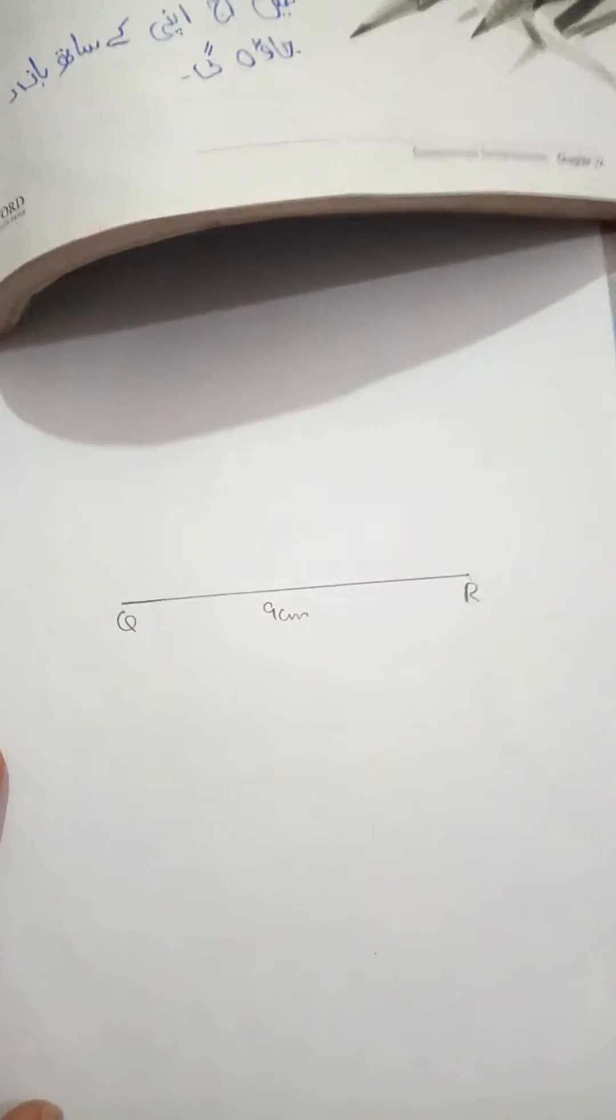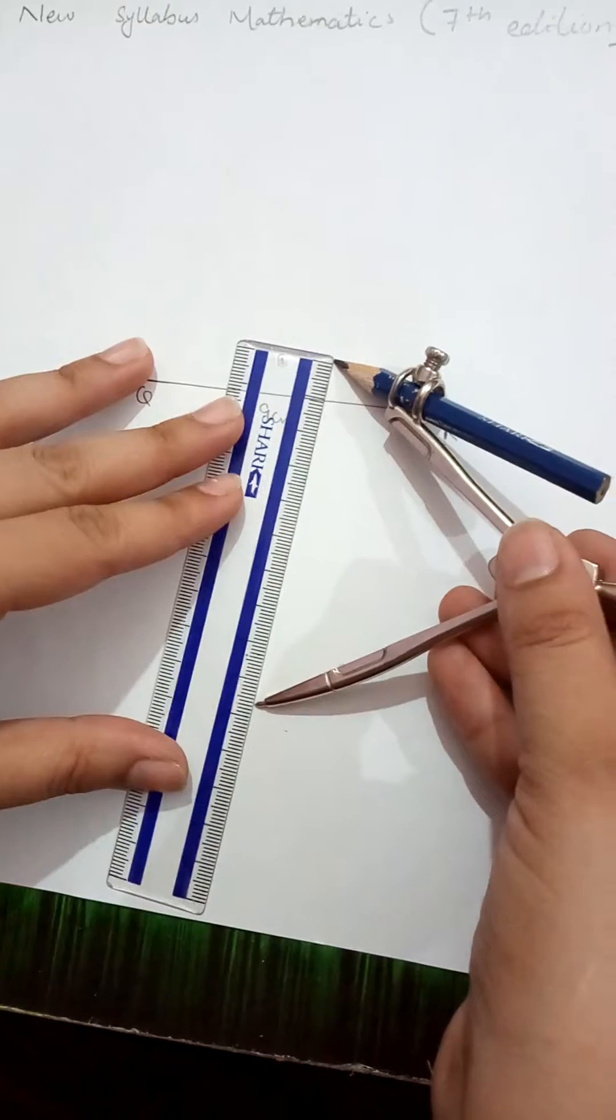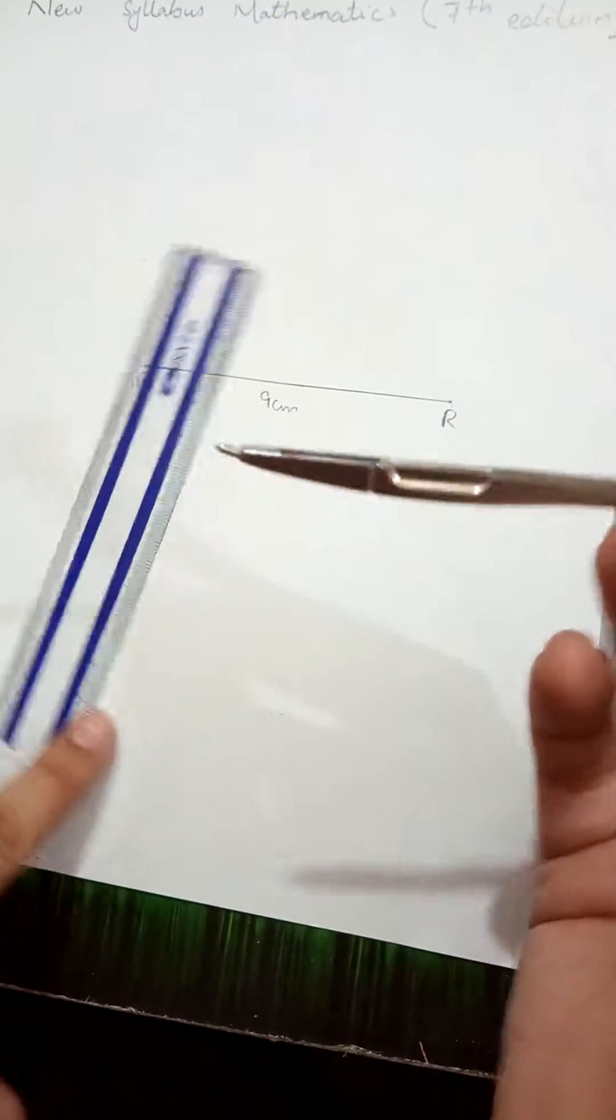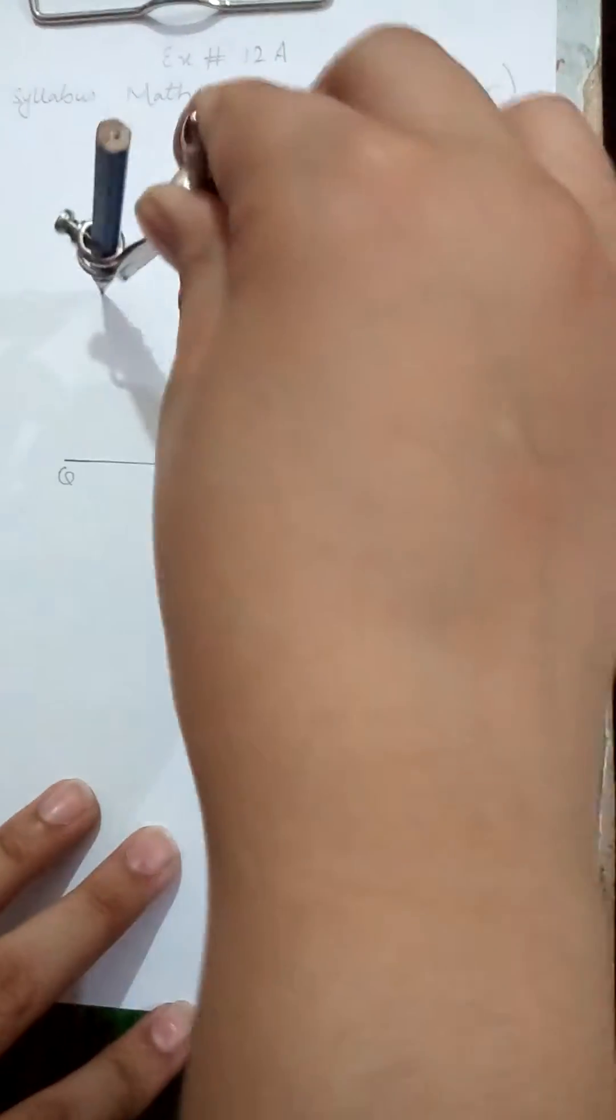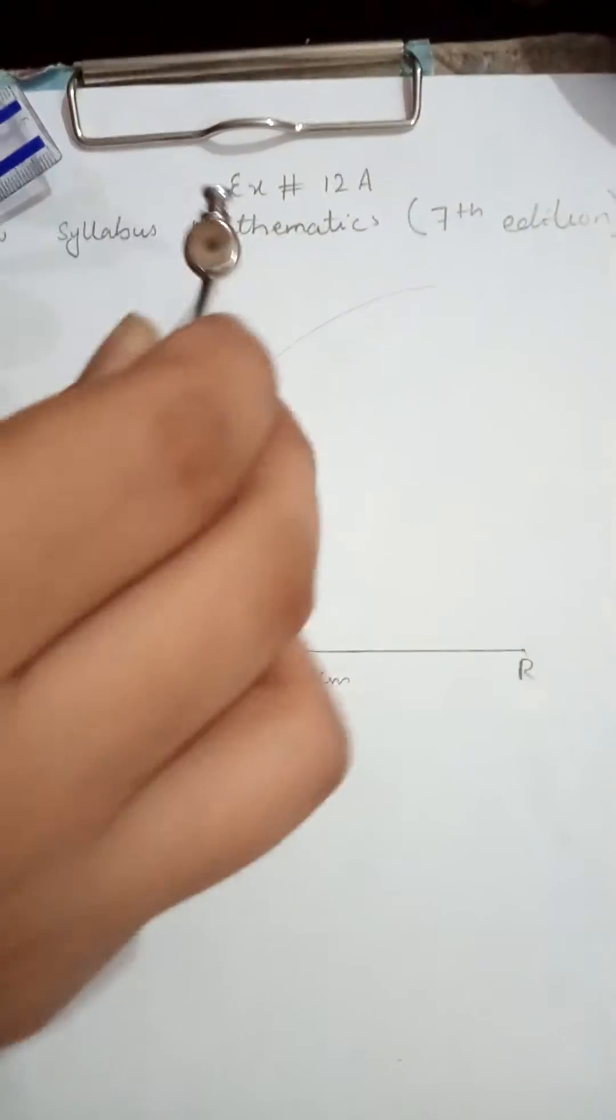Then I'm taking the radius of this compass at 10 centimeters, that is given in the question. Taking Q as a center and marking arc 1.